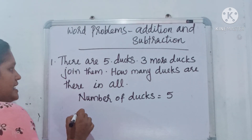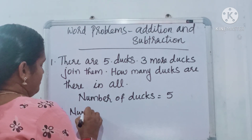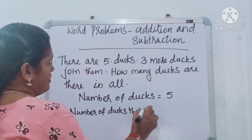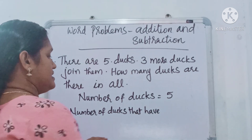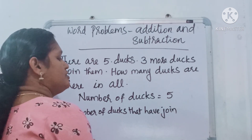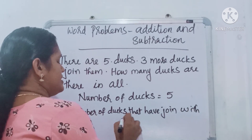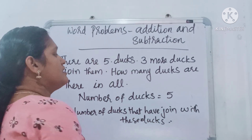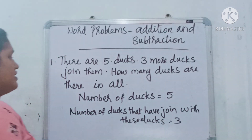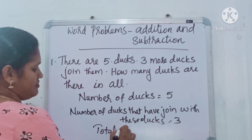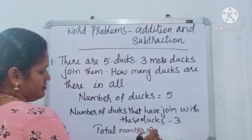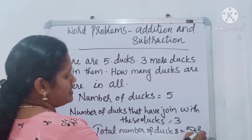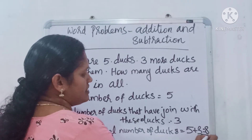Then, number of ducks that joined equals 3. Total number of ducks equals 5 plus 3, which equals 8. Clear?